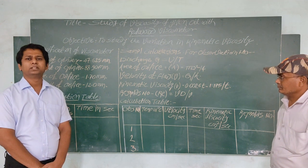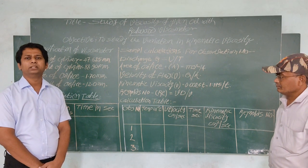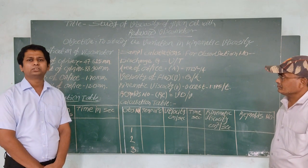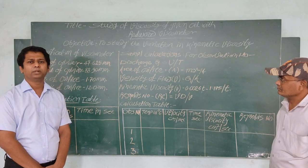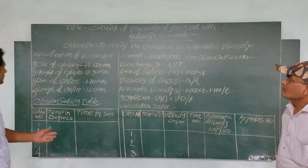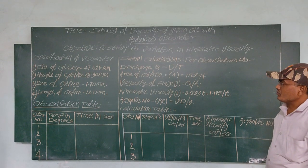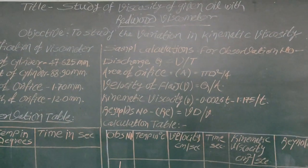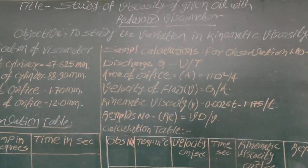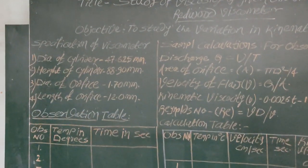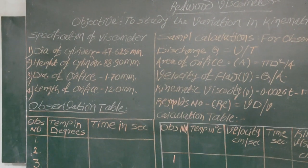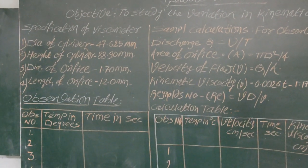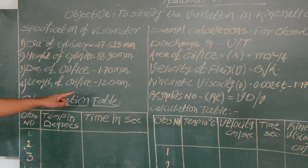A Redwood viscometer is a device used to calculate the viscosity of a given oil. The specifications of the viscometer are as follows: the diameter of the oil cylinder is 47.625 mm, the height of the cylinder is 88.9 mm, the diameter of the orifice is 1.7 mm, and the length of the orifice is 12 mm.